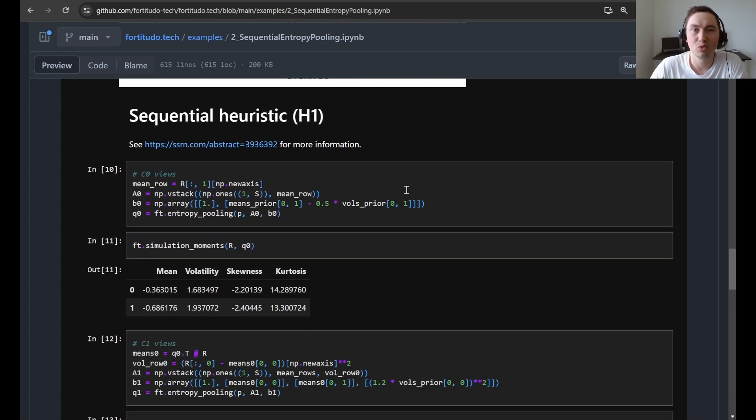So next up we process it in a sequential way using the H1 heuristic and you can read about it here in this article or see the previous video. So here you can see we implement these C0 views that I explained in the article. So basically what it means is that we start by only processing the mean views that we have. So this is only the view on the Stoxx 50.